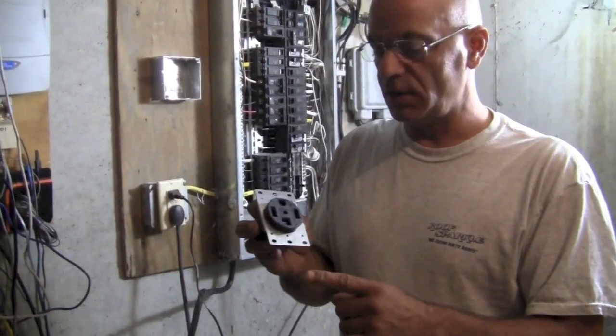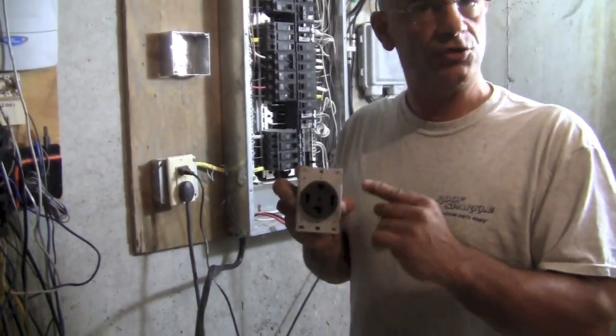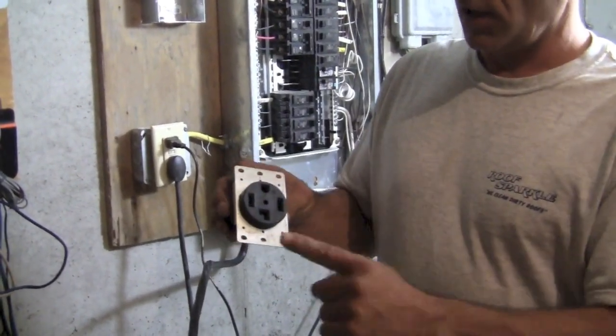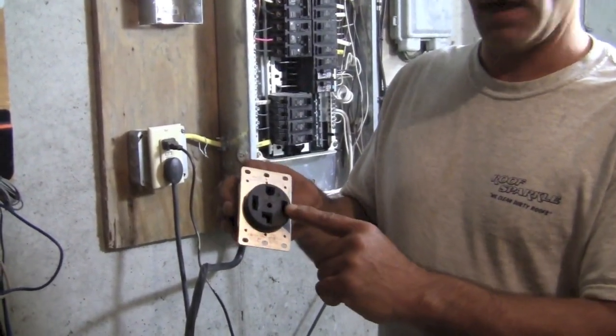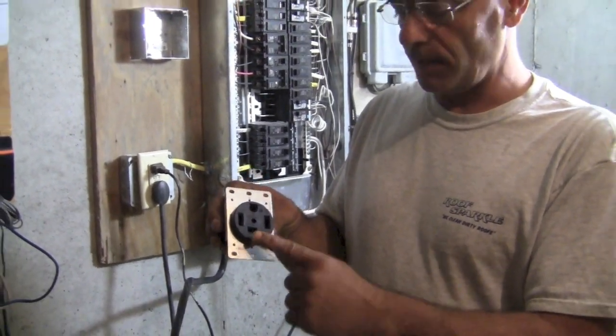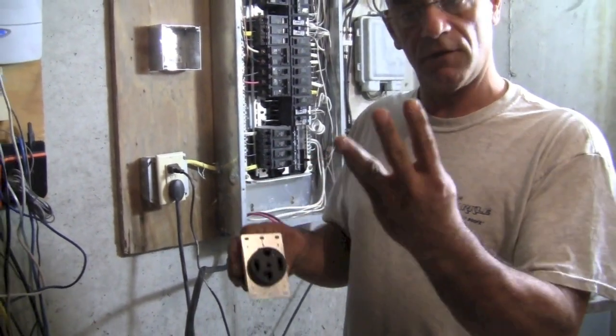Here's the outlet that we're going to be installing. This is a 30-amp for a dryer. If you look, we have one, two, three, four. They're going to be our two hots, both the same, doesn't matter. Our neutral right here, and now our ground, so that's a four-wire.